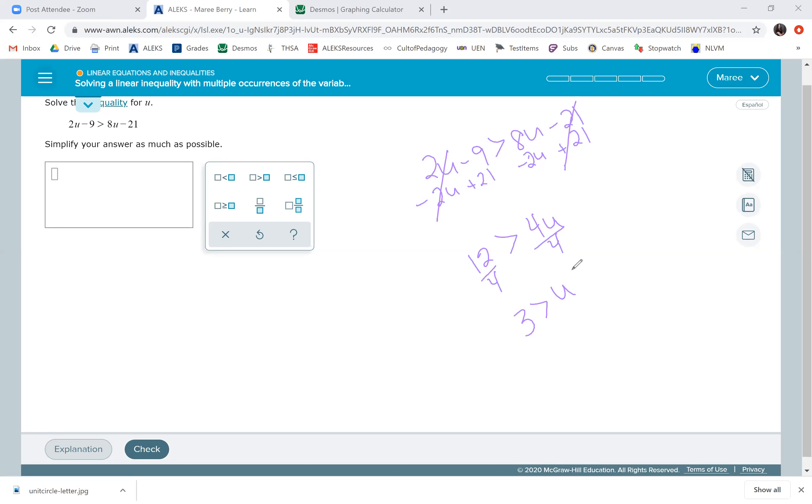Type that in. You could also write it as U is less than 3 if you wanted to. 3 is greater than U. Check.